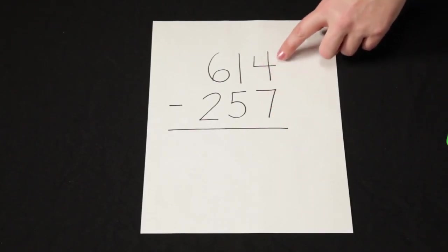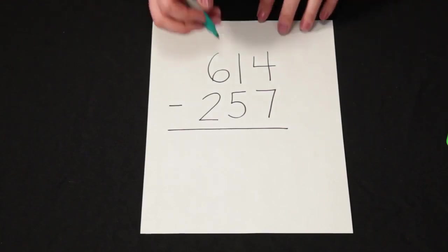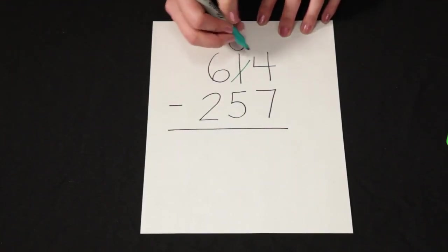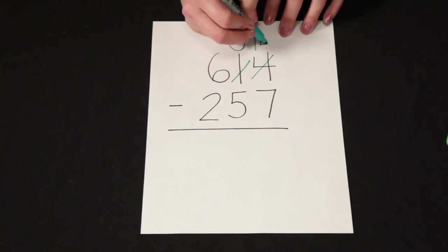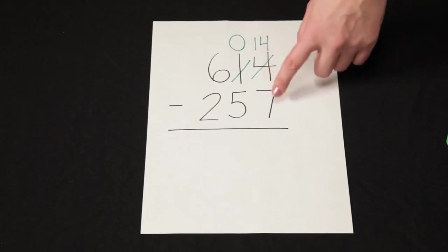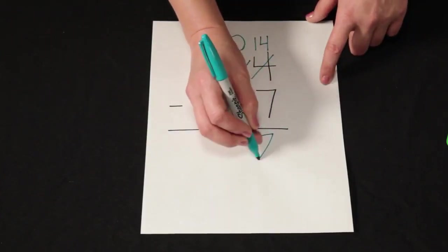It's hard to take away 7 ones from 4 ones, so I can regroup, which means I take 1 ten and I regroup it for 10 ones. Now I have 14 ones. 14 minus 7 is 7.